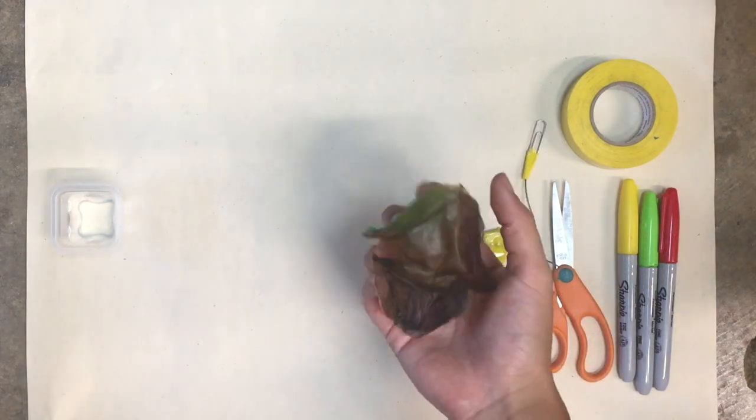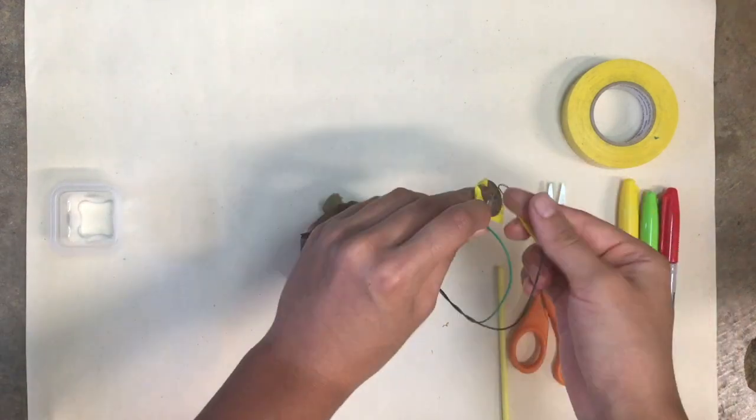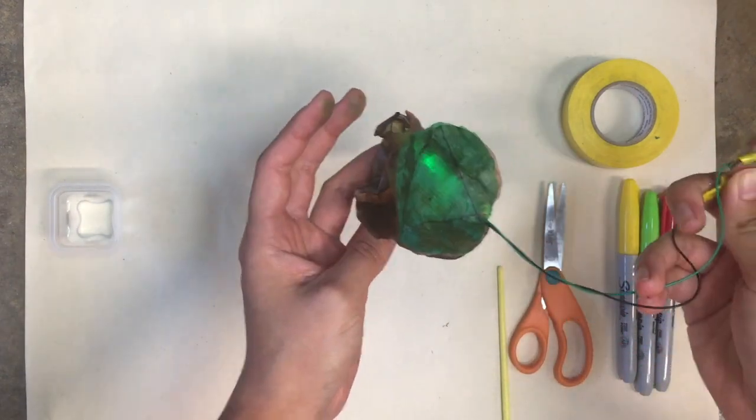Now that you've finished putting together your kombucha lantern, it's time to decorate. Scrap pieces of kombucha leather make great attachments and decorations.